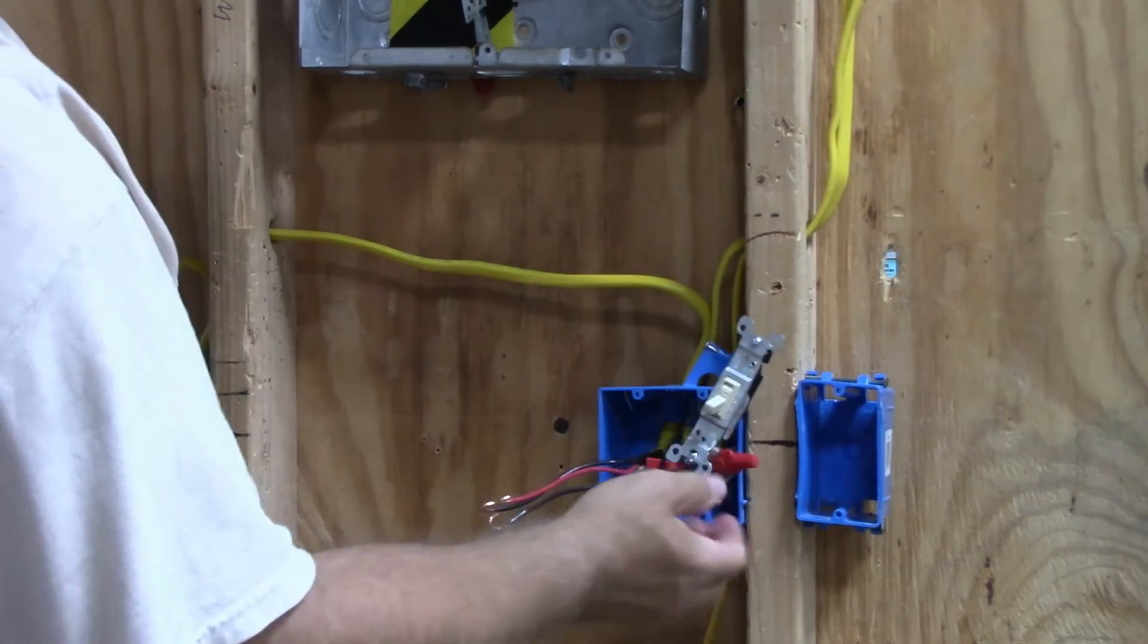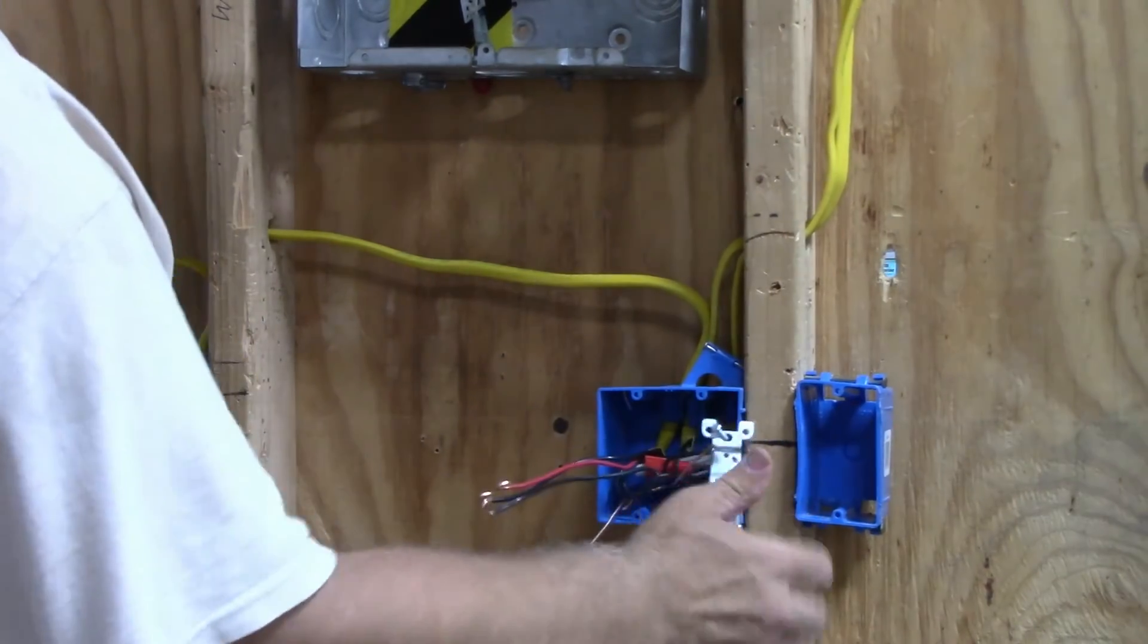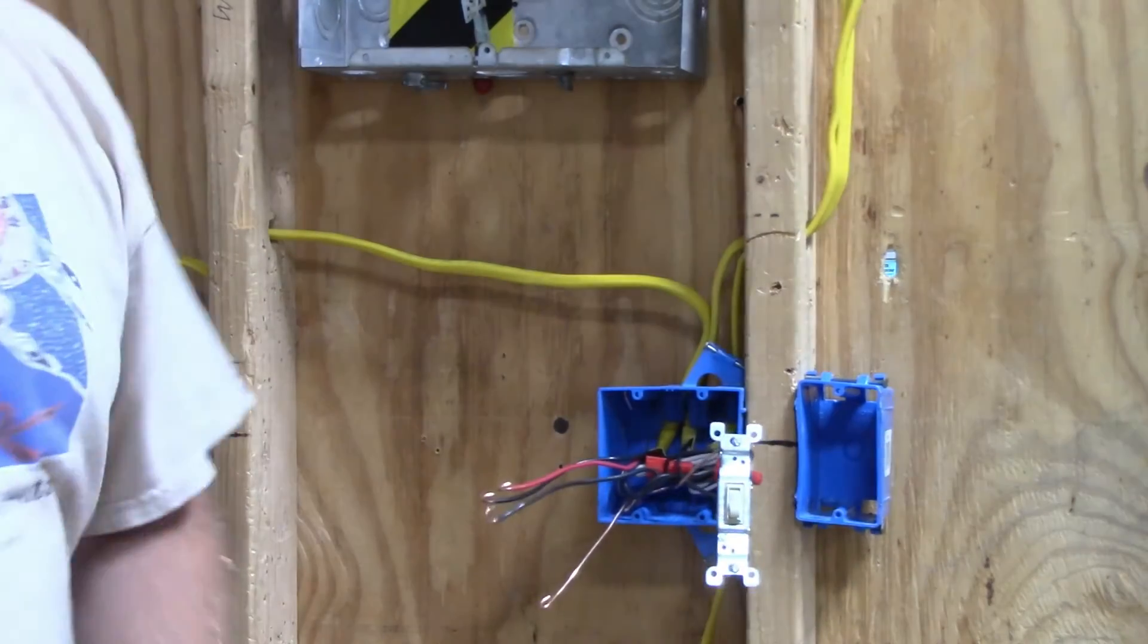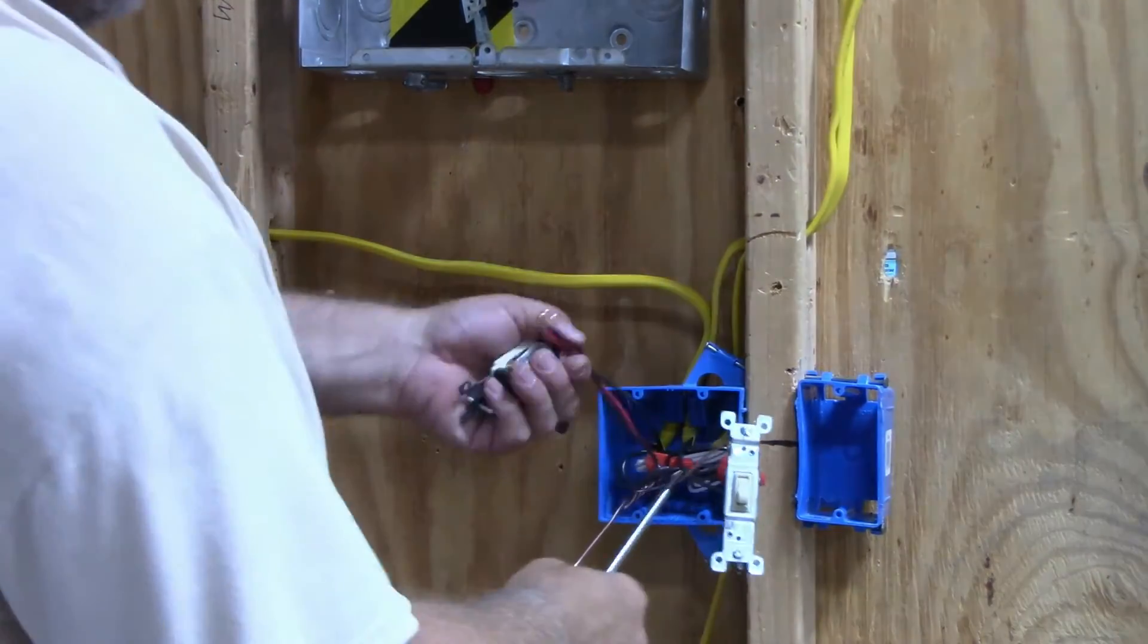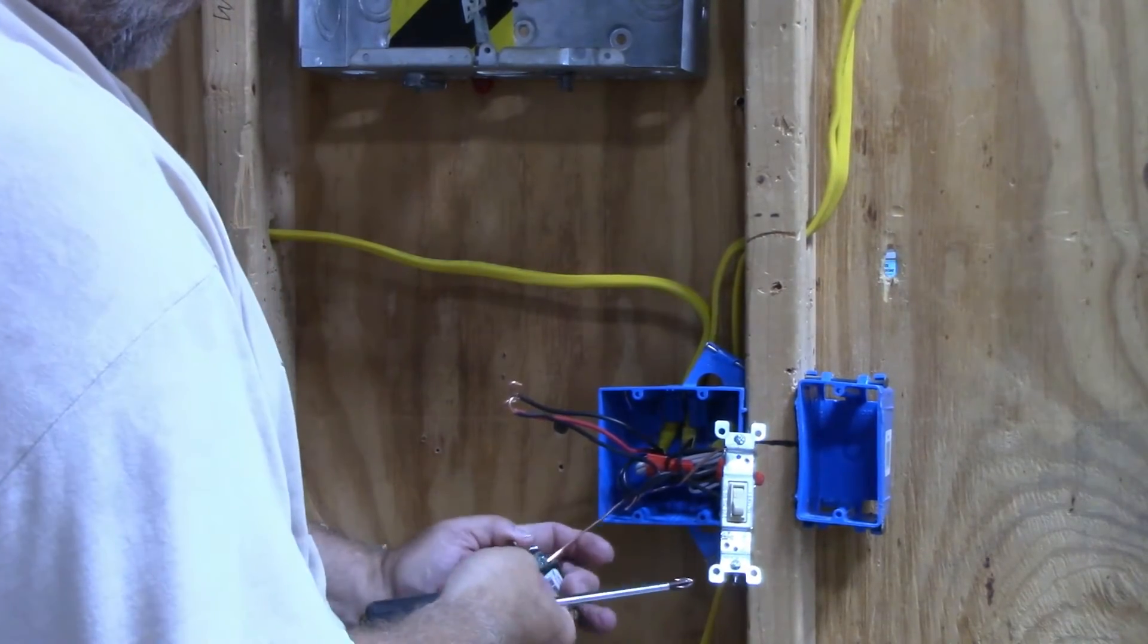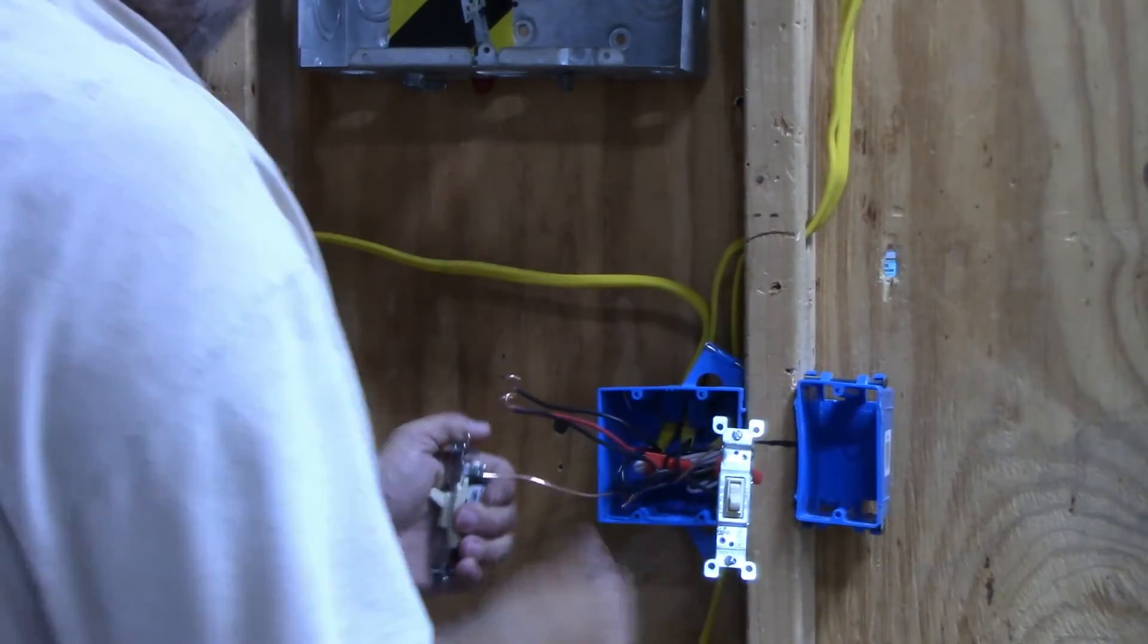You can put it in there on or off, depending on whether you want on going up or down. Then on the other one, it's my three-way switch. Again, we're going to hook up the ground wire.